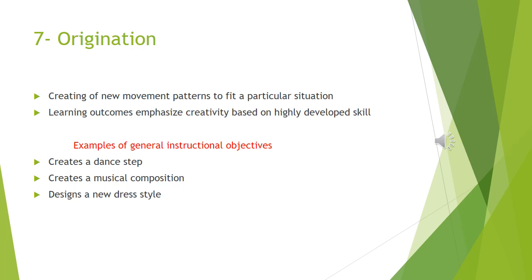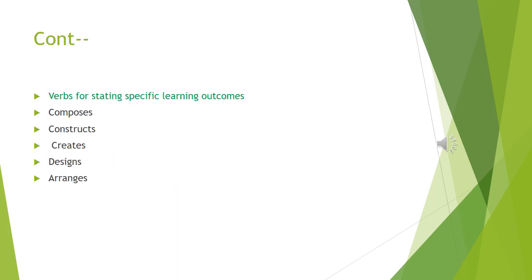Origination is concerned with creating new movement patterns to fit a particular situation. Learning outcomes here emphasize creativity based on highly developed skills. Examples of general instructional objectives include: creates a dance step, creates a musical composition, and designs a new dress style. Verbs like composes, constructs, creates, designs, and arranges can be used for stating specific learning outcomes at this highest level of psychomotor domain.